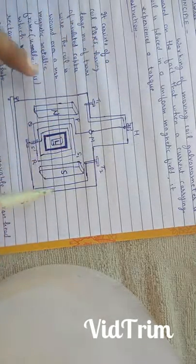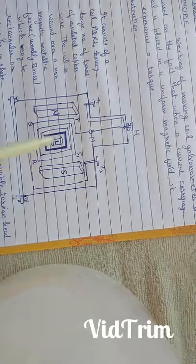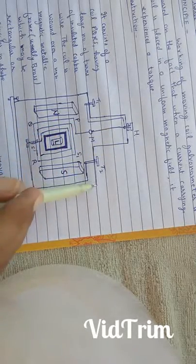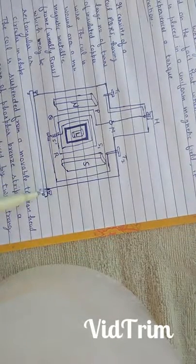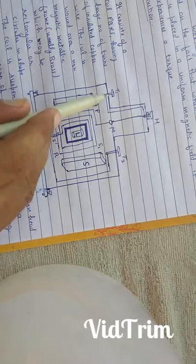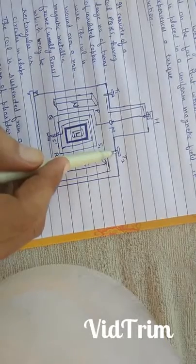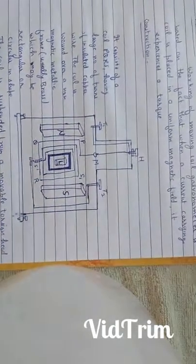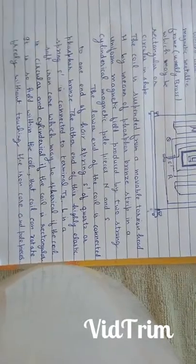This whole arrangement is enclosed in a non-magnetic metallic frame to avoid disturbance due to air. This frame has leveling screws at its base. This moving coil galvanometer can be connected to a circuit through terminals T1 and T2. Therefore, this is the construction of moving coil galvanometer.